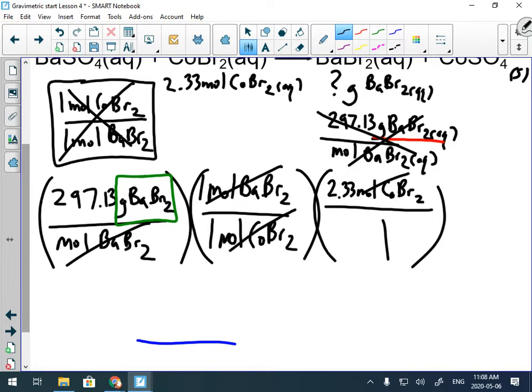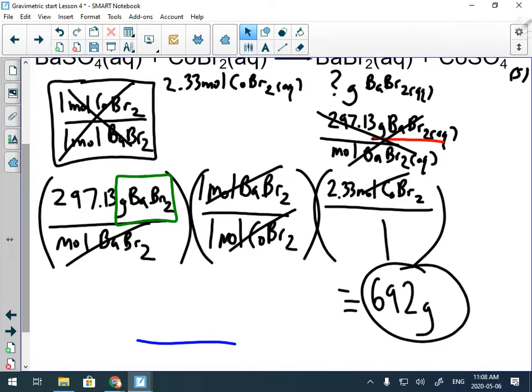Now using my little blue thing here, we have moles cobalt bromide on the bottom. Once we use this, we can't use it again. So by process of elimination, the only thing that's left is the moles that we're given for cobalt bromide. So I'm going to put those on top. 2.33 mole cobalt bromide. And that doesn't have a friend, so I can say it's over one. Cobalt bromide cancels. So mathematically, I'm literally just times this number by 2.33, because all of those ones don't do anything. 297.13 times 2.33 gives me 692. Three sig figs. 692 grams. It's pretty heavy.